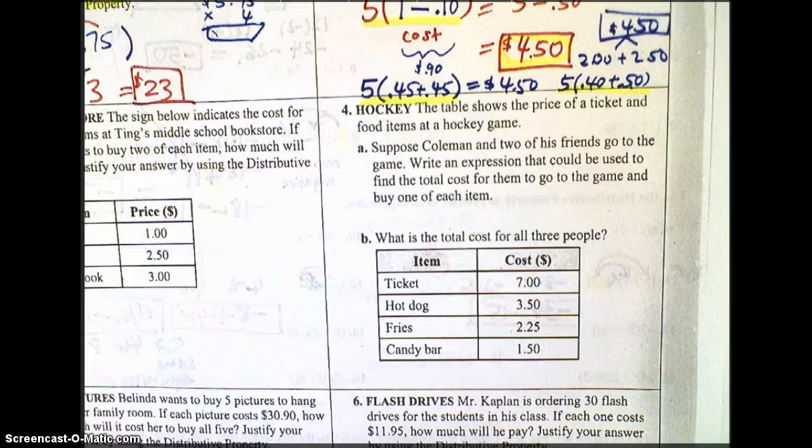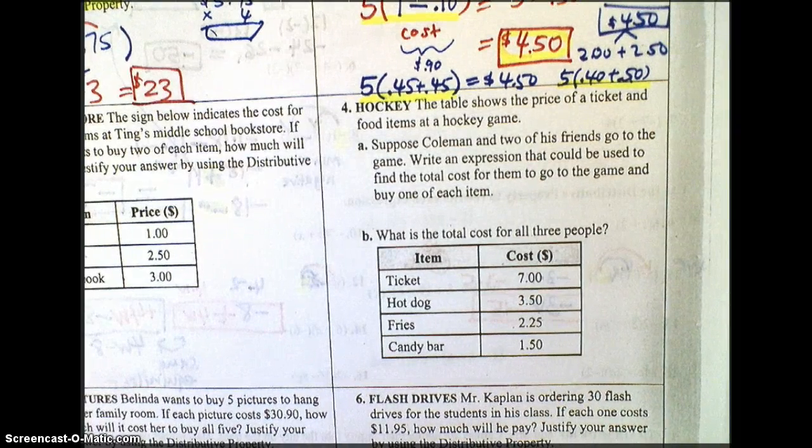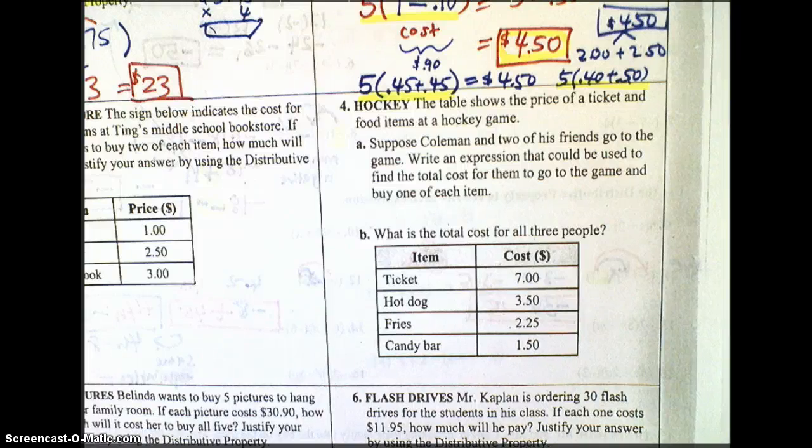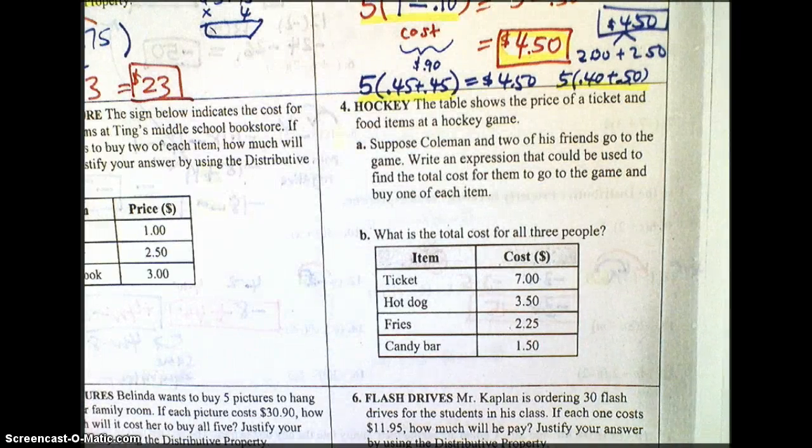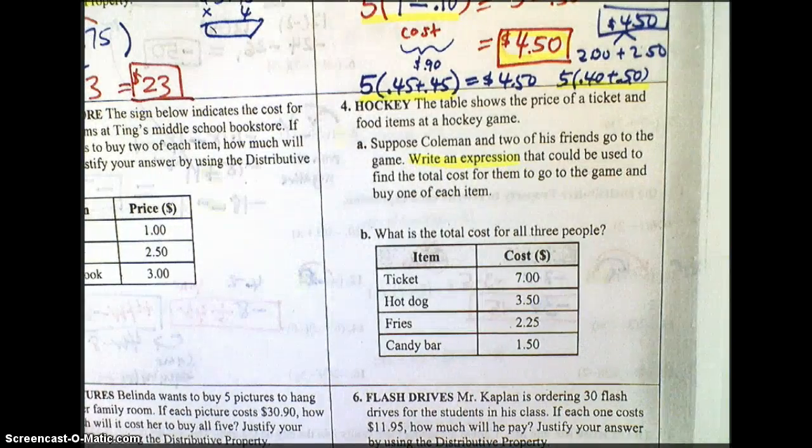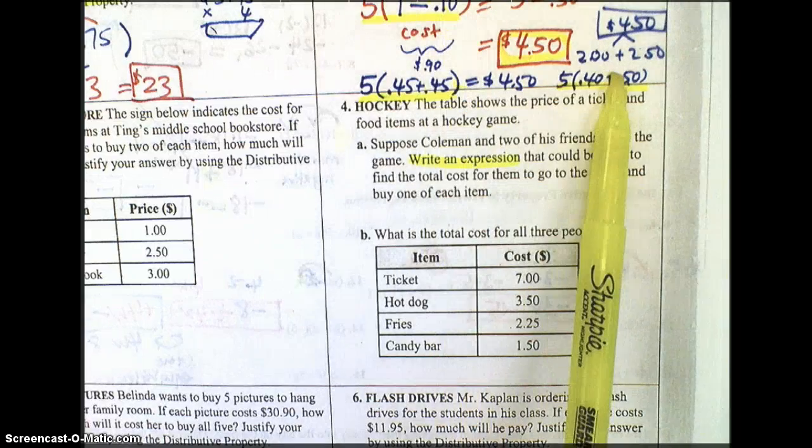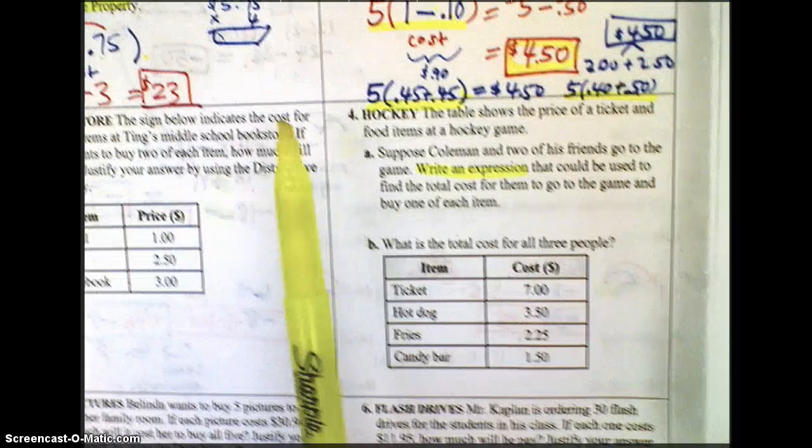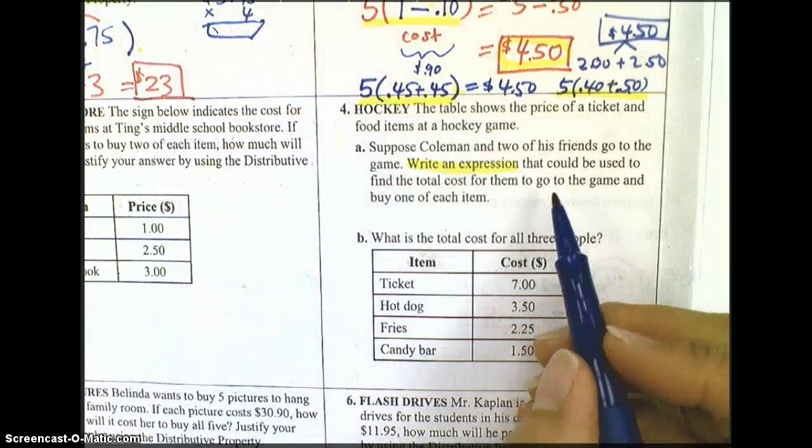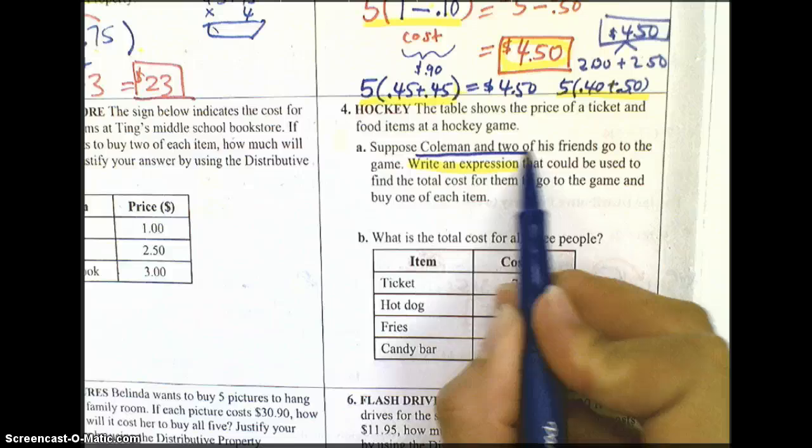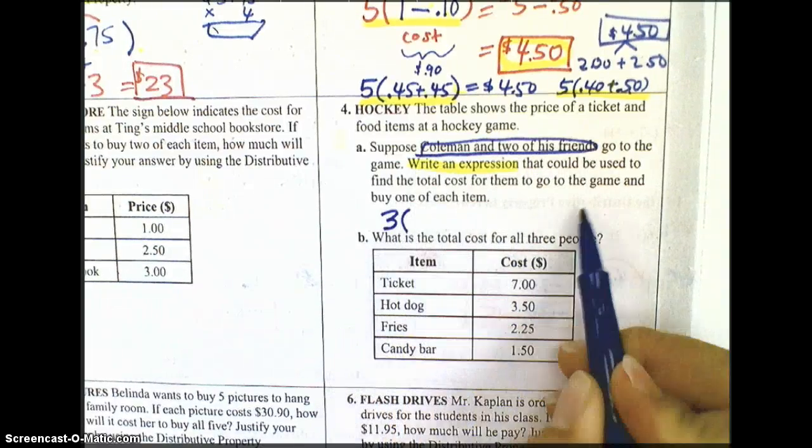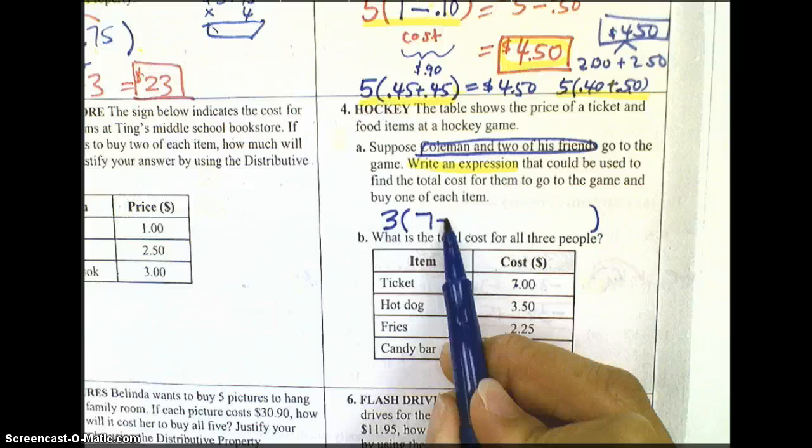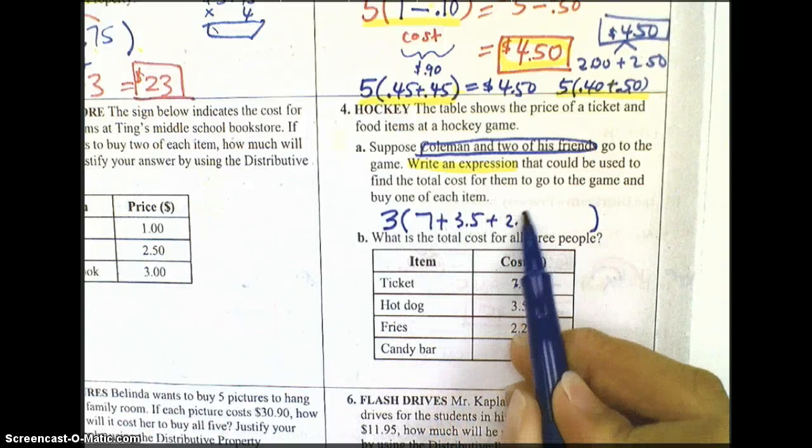I'm going to do number four and that's going to be the last problem I'm going to do for this video and you can definitely try the rest by yourself. Pause to read number four. In number four, the problem just splits it up for us into two parts where the first part we're writing the expression just like we did in number two. So we're just going to be writing an expression. Now, the number of friends that are going is Coleman and his two friends. So there's a total of three friends and each of them are going to buy one hot dog, one fry, and one candy bar.